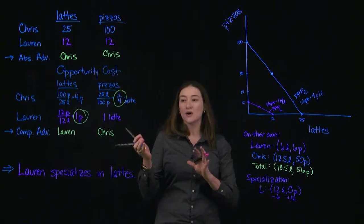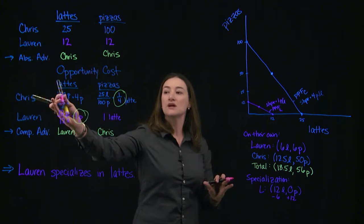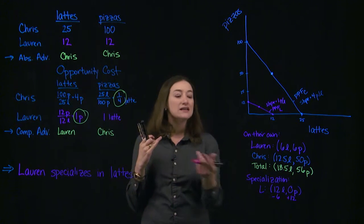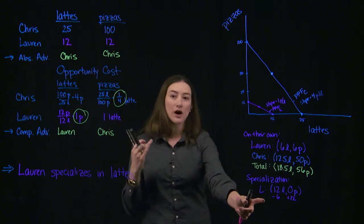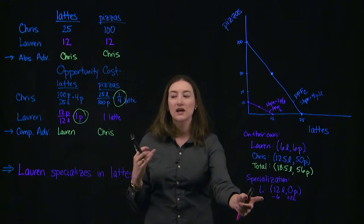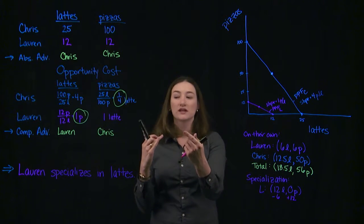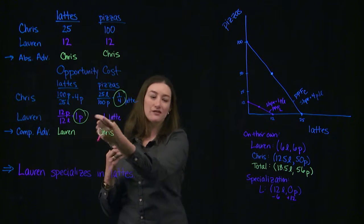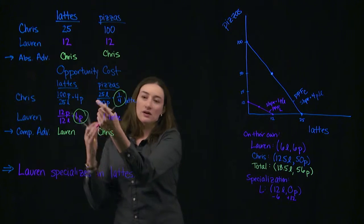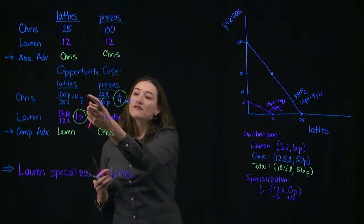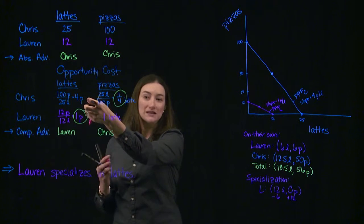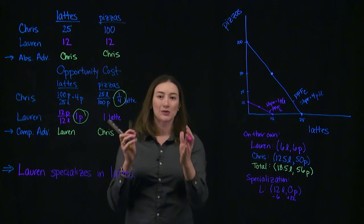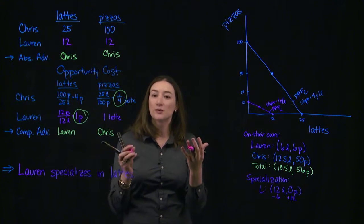Is Chris okay with that trade? Think about what it costs him. Normally, if he wants to gain a latte, he has to give up 4 pizzas. But this trade only requires him to give up 2 pizzas per latte. So they're both willing to trade. Lauren is better off because right now it costs her 1 pizza for every latte — that's the most she can get on her own. For Chris, it costs him 4 pizzas for every latte. So if they trade at a ratio of 2 pizzas per latte, they can actually both be better off.